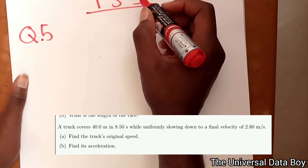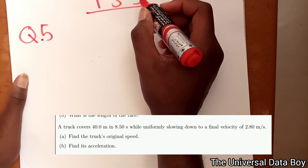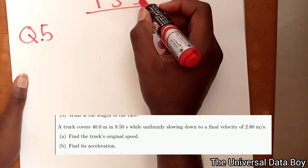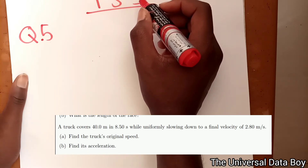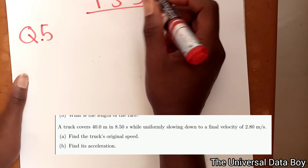A truck covers 4.0 meters in 8.5 seconds while uniformly slowing down to a final velocity of 2.8 meters per second. Part a: find the truck's original speed. Part b: find its acceleration.